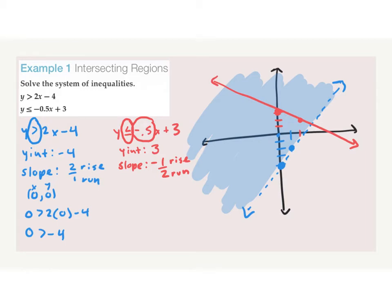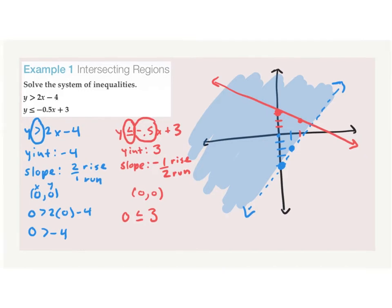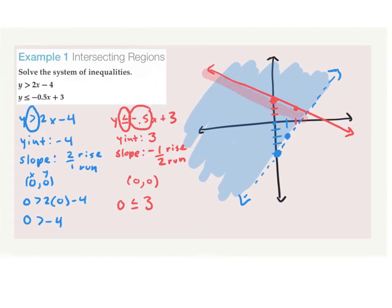Now we need to shade. We plug in (0, 0): 0 ≤ 3. Is this true? Yes. So we shade below the line. Our answer is just the overlapping part — the purple region. We erase everything else and only keep what overlaps.